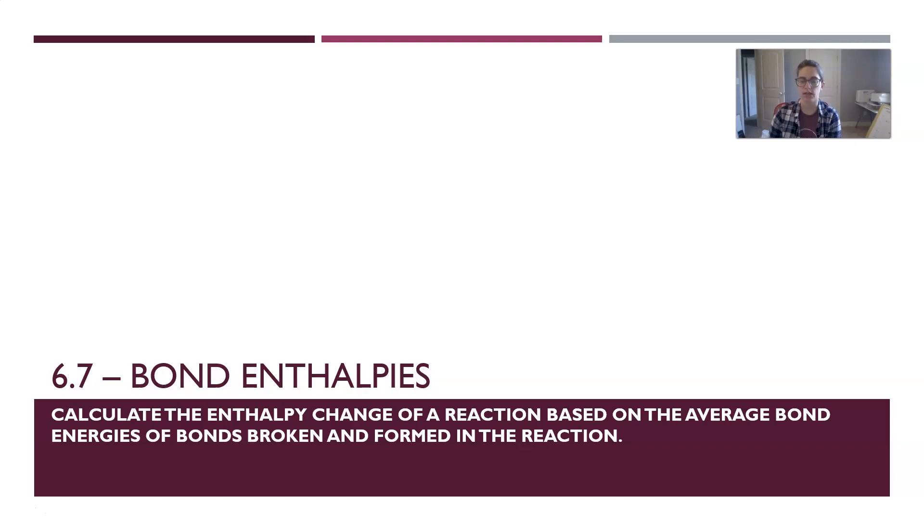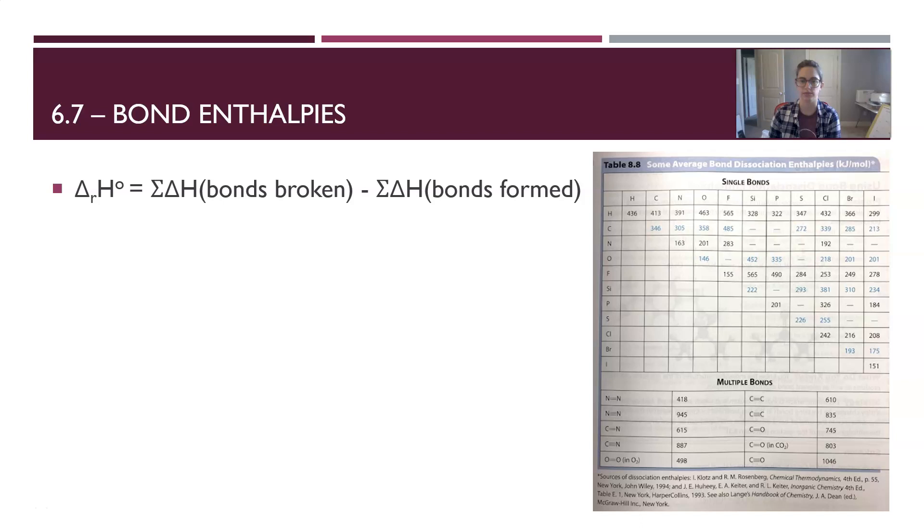In this topic, we're going to look at the specific amounts of energy for each type of different bond. In our class textbook, the table we're going to use is table 8.8, which gives you average bond dissociation enthalpies in kilojoules per mole for different bonds.